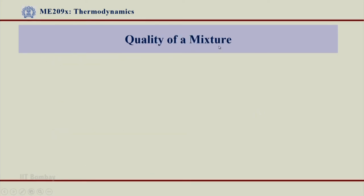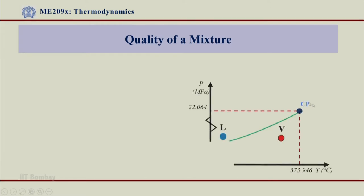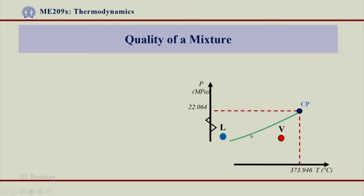Let us first see quality of a mixture. The quality of a mixture can be seen from a PT diagram. Whenever I say quality, it is related to the two-phase mixture — the mixture which is inside the dome, any system which lies inside the dome. Not outside the dome, not on the lines, but inside the dome in the two-phase mixture. The two-phase mixture lies on the saturated liquid-vapor line. I am considering a point — the system which lies on this point — and this is the two-phase zone.